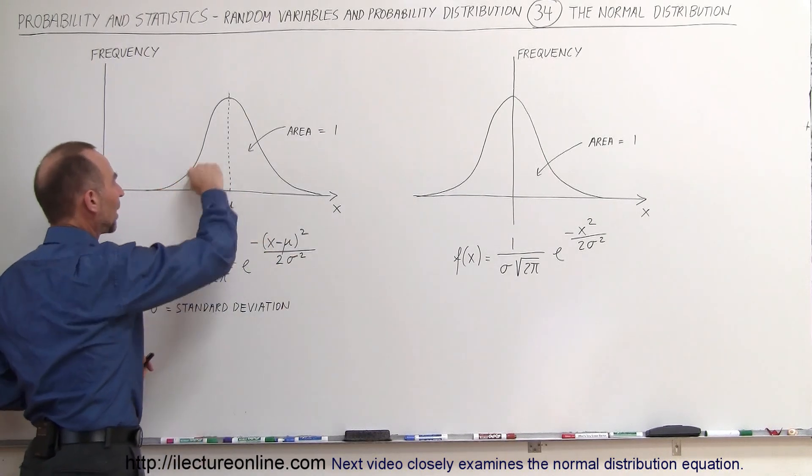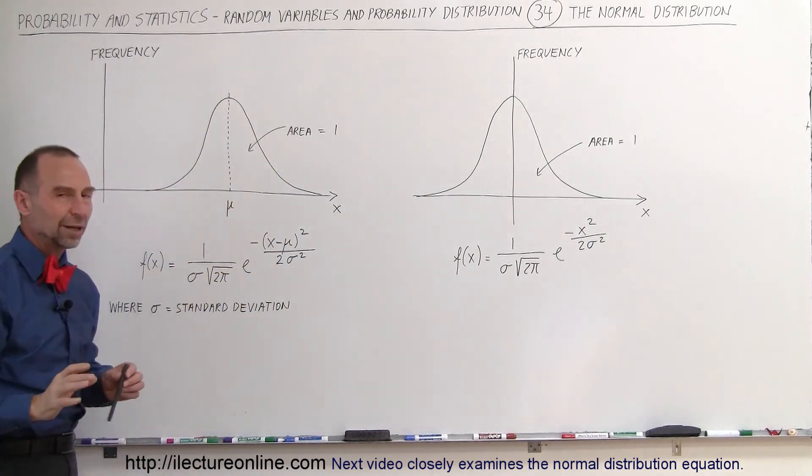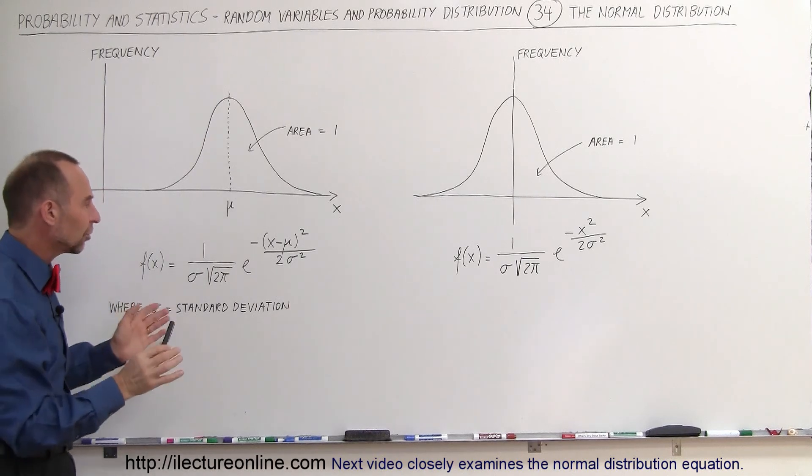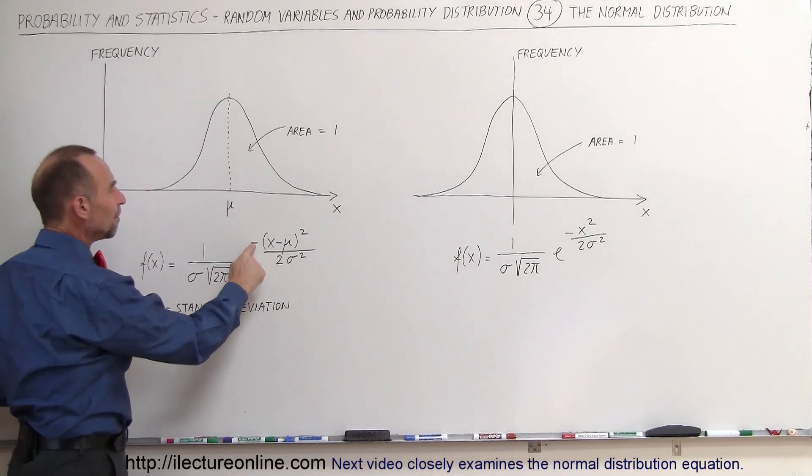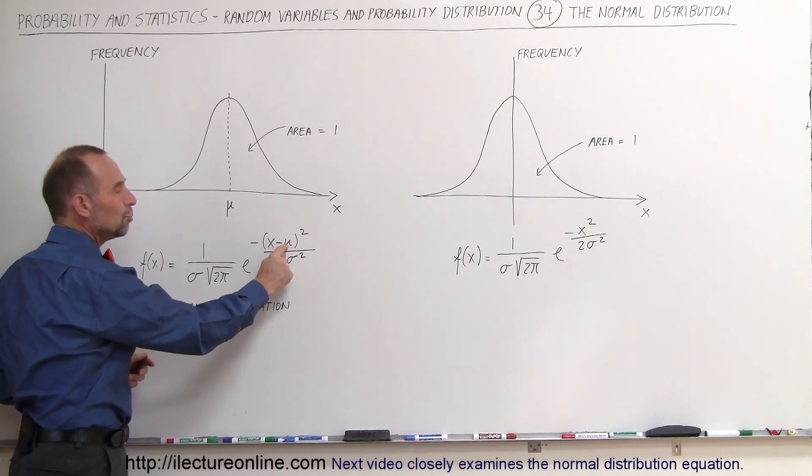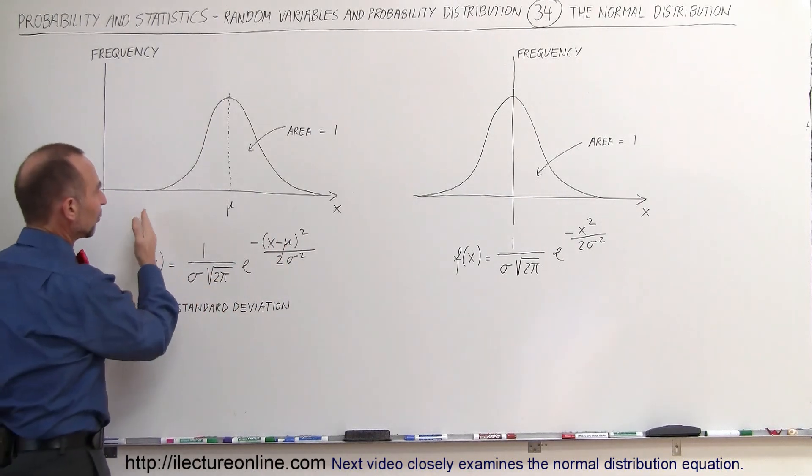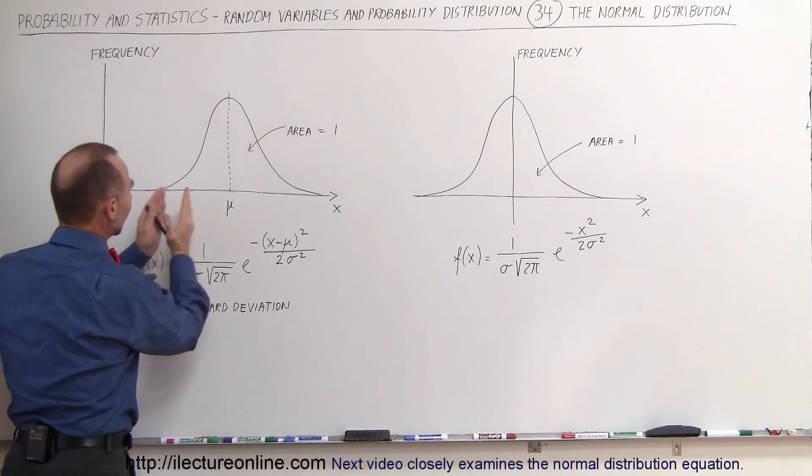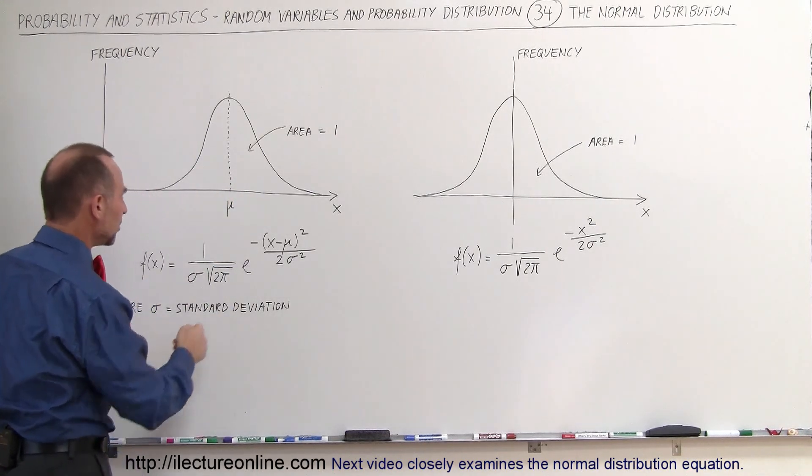The equation here that describes the curve is equal to this equation right here. Now, it looks like a complicated equation, but that's okay. This is simply an e to the minus x squared type of function. Notice x minus mu, mu is the average value, is of course, that takes the curve and sets it off to the value mu right here. Centers on the value mu.